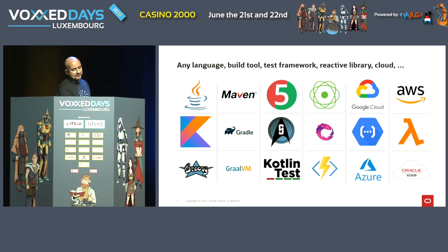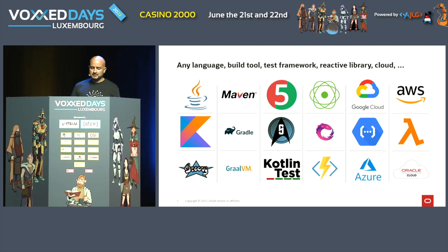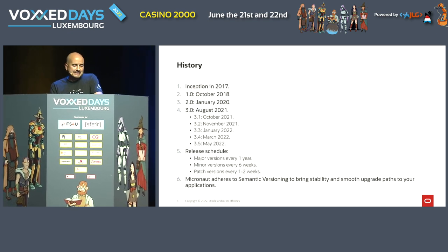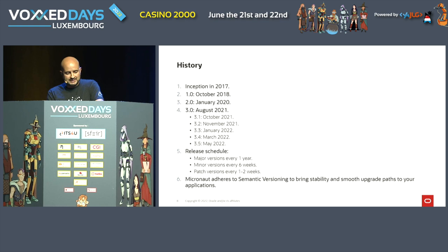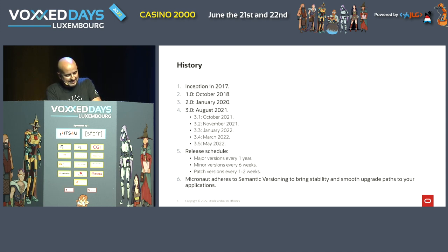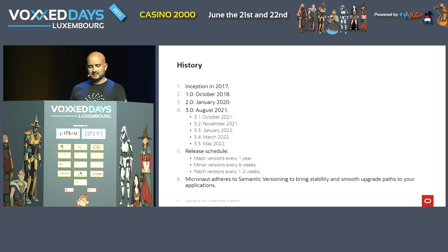We support a wide variety of technologies, languages, build tools, and clouds. The idea is that this is general purpose. We began in 2017 and have done several releases — the latest is 3.5, and we're having Micronaut 4 before the end of the year, with a baseline of Java 17. We use semantic versioning to bring stability and smooth upgrade paths to your applications.